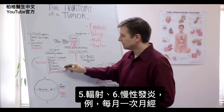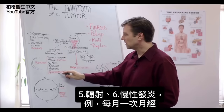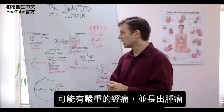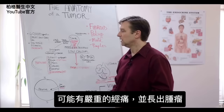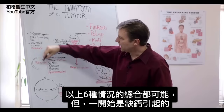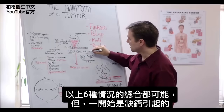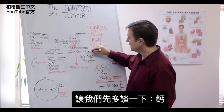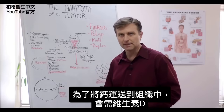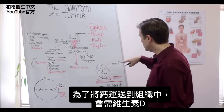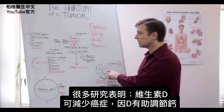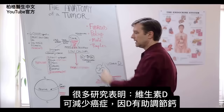And then you have radiation. Now, chronic inflammation — let's say you're having a menstrual period every single month — you're setting yourself up for growing tumors from that terrible, heavy, crampy cycle. So it really is a combination of all these things, but it all starts with calcium. In order to transport calcium into the tissues, you need vitamin D, and there are even a lot of studies that show that vitamin D reduces cancer simply because it helps you regulate the calcium.